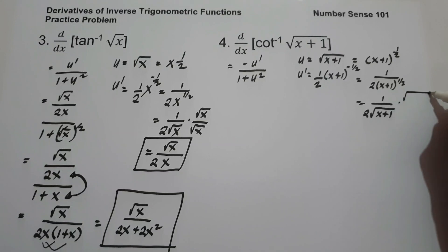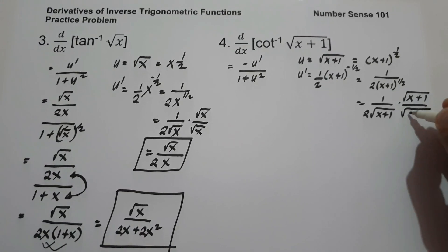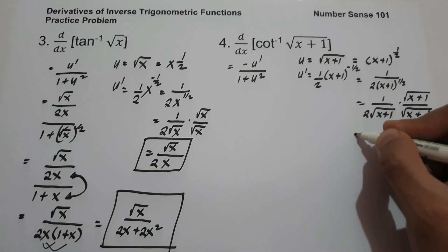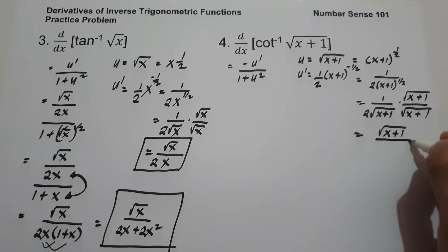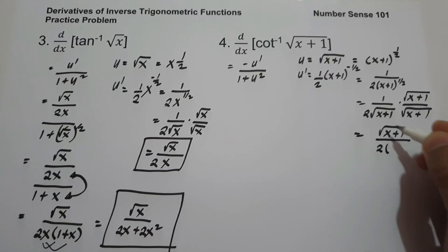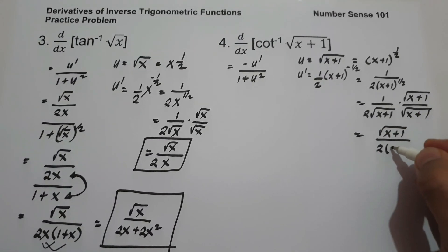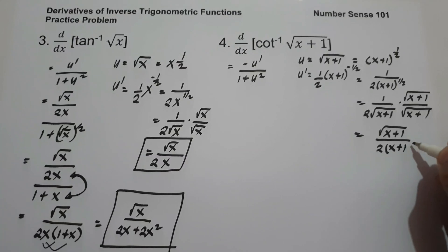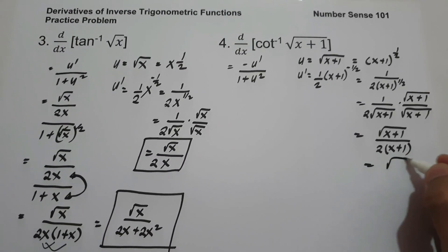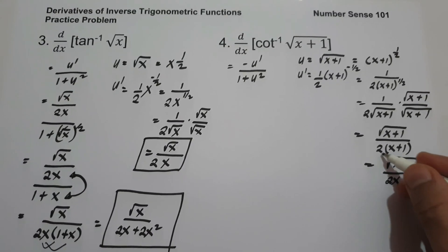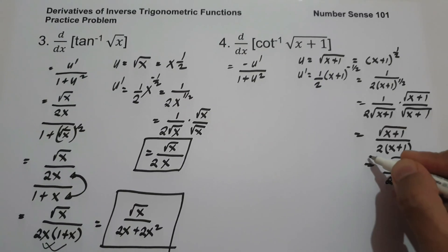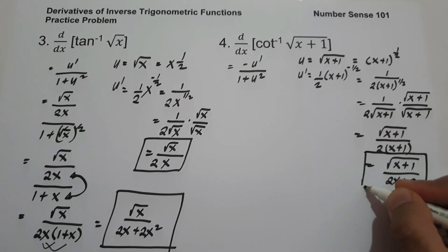To rationalize, multiply numerator and denominator by square root of x plus 1. So this gives square root of x plus 1 divided by 2 times x plus 1. Simplified, this is square root of x plus 1 over 2x plus 2. And this will be the value of u prime.